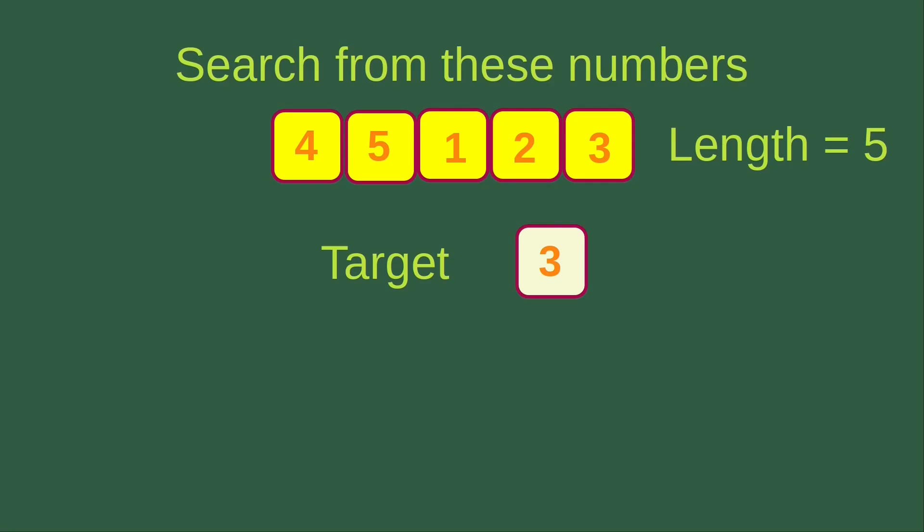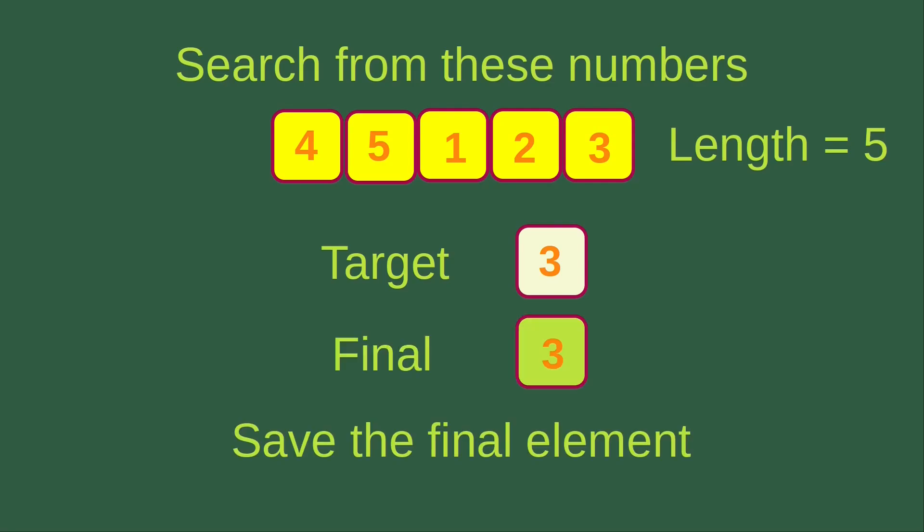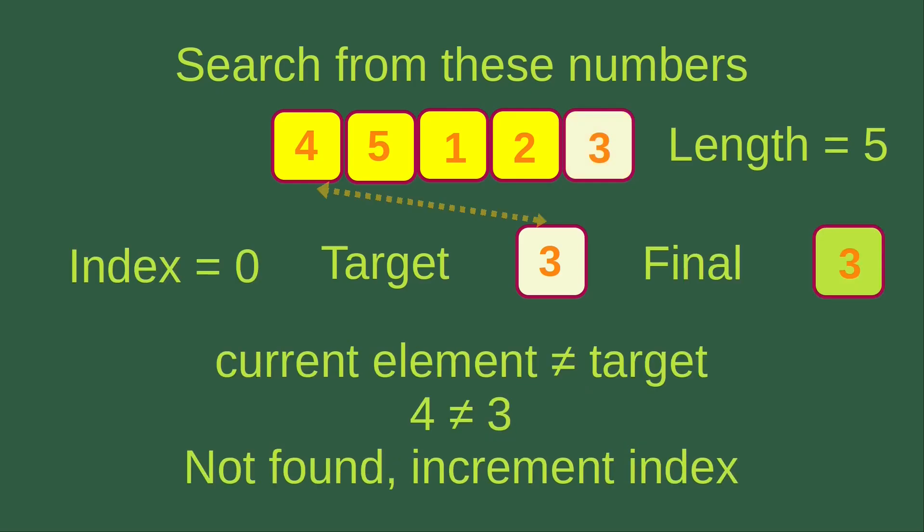Now let's look at another situation: the target is actually the final element of the array. We have the same array with length 5. The first step is to save the final element, so number 3 is saved in the final variable. Starting at index 0, we compare number 4 with the target, which is number 3 — they are not equal, so we increment the index. At index 1, number 5 is not equal to number 3 either, so the element is not found yet and we increment again.